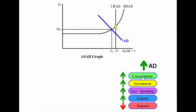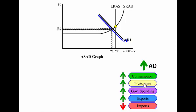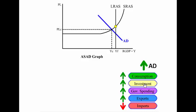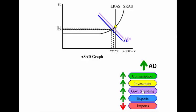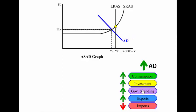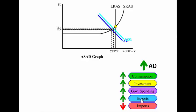If there's an increase in investment, this shifts aggregate demand to the right, driving the price level up and the real GDP or national income up. If there's an increase in government spending, this shifts aggregate demand to the right, driving the price level up and also the real output, GDP, and national income up.